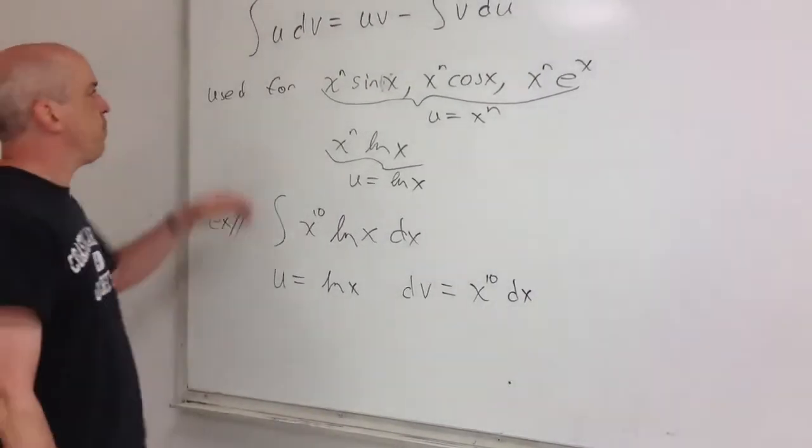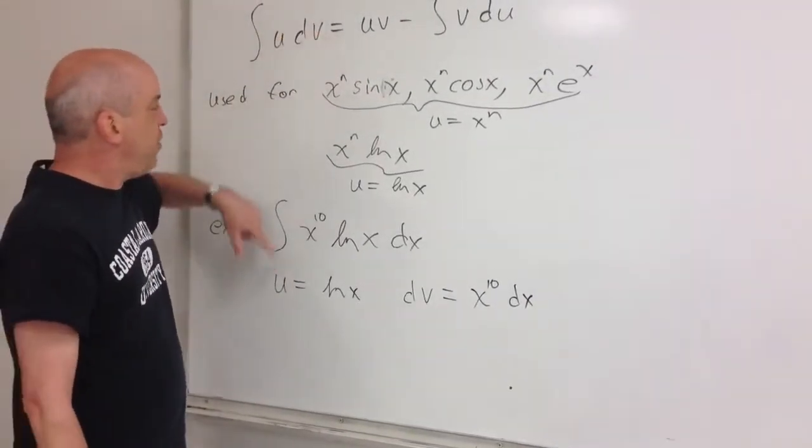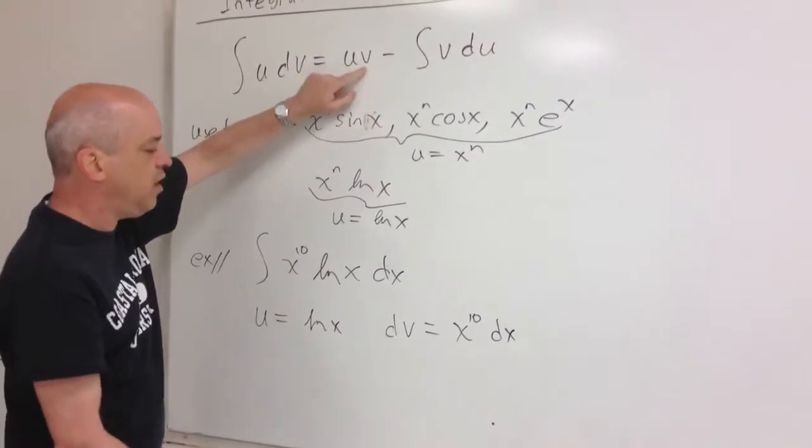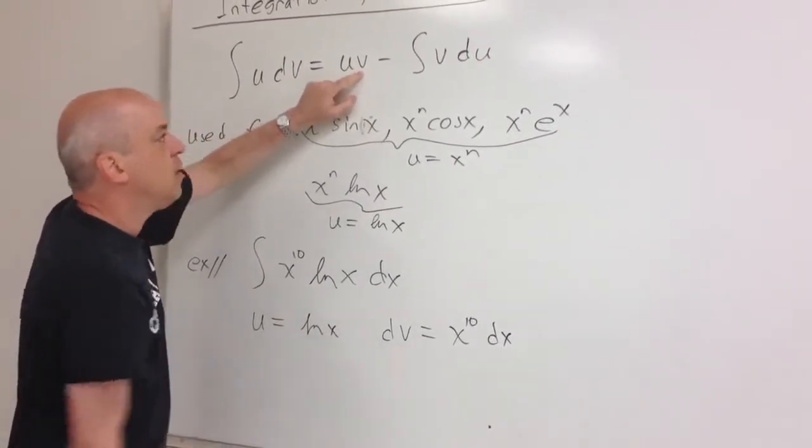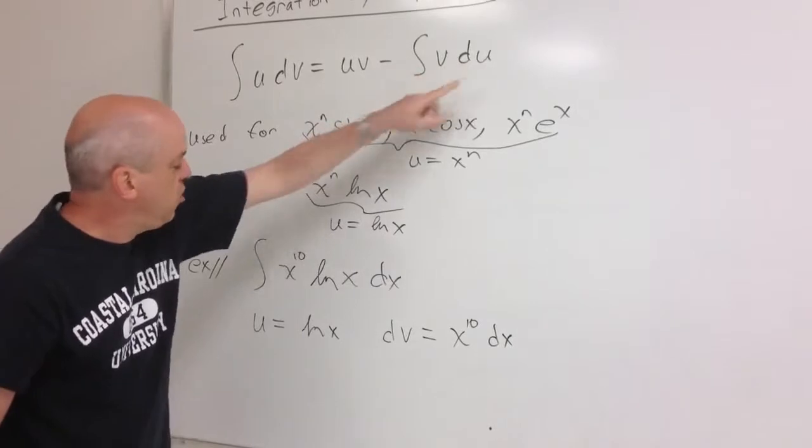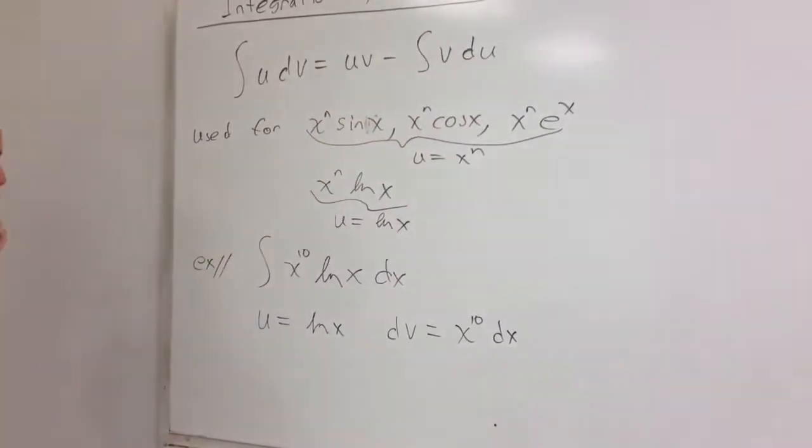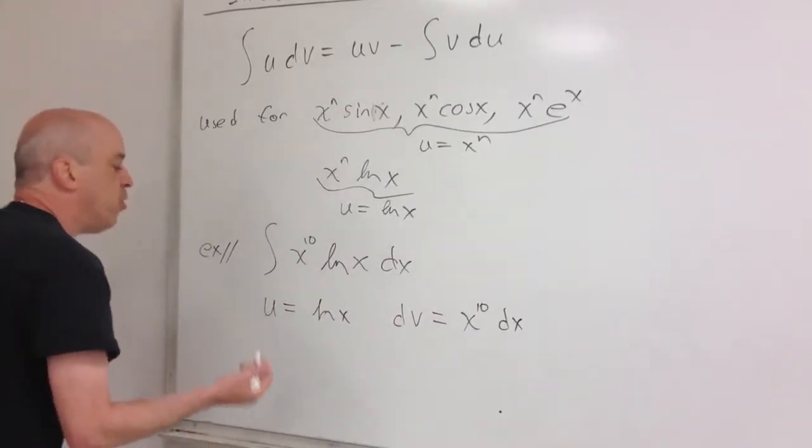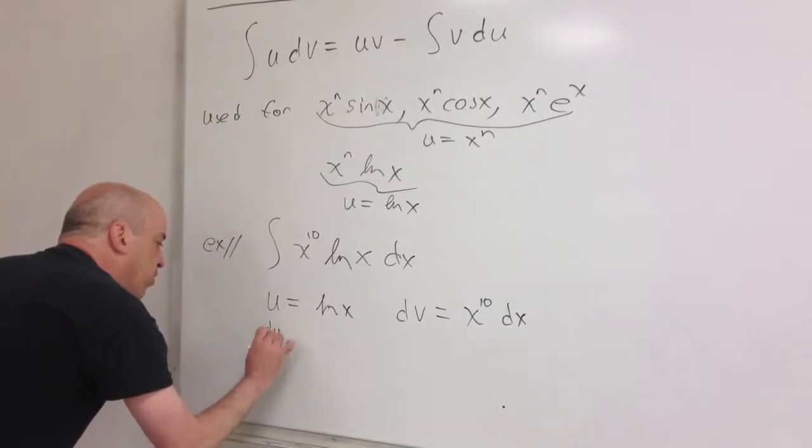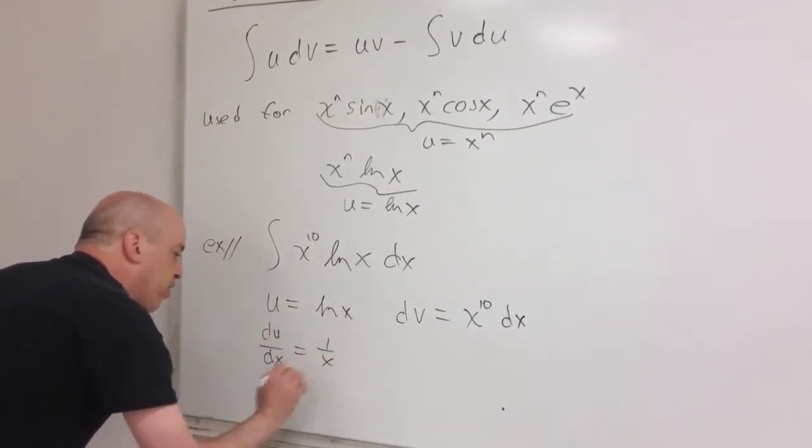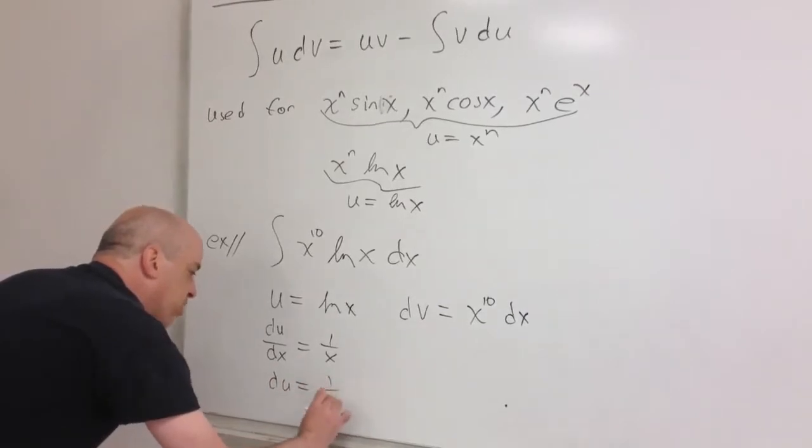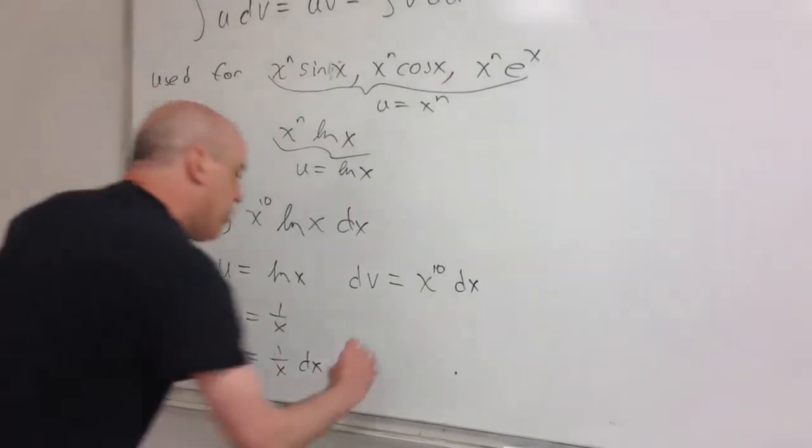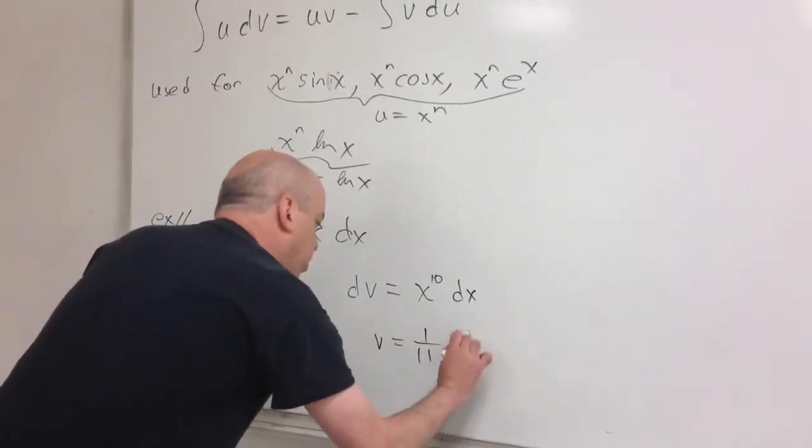So how do we get du? We take the derivative. du over dx is 1 over x. That makes du 1 over x dx. How do we get v from dv? We take the antiderivative. v is 1 over 11, x to the 11th.